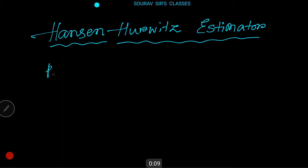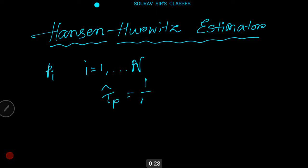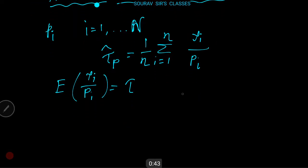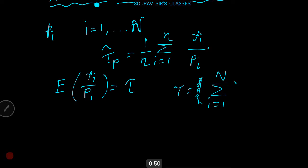Let Π_i, where i equals 1 to capital N, denote the probability that a given unit in the population will be selected. The Hansen-Horvitz estimator is τ̂_P = (1/n) × Σ(i=1 to n) y_i / Π_i. The expected value E(y_i / Π_i) equals τ, where τ = Σ(i=1 to N) y_i, which equals the population total.